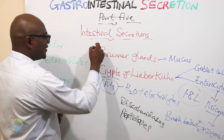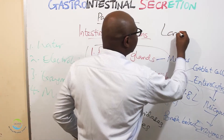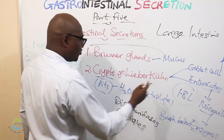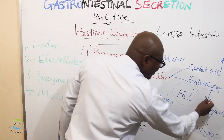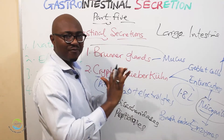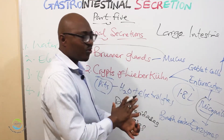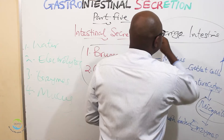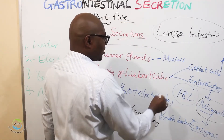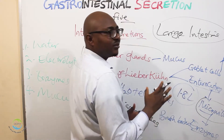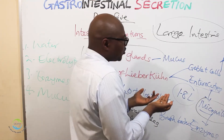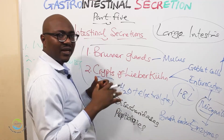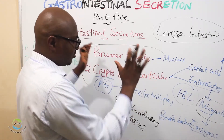In the large intestine, the crypts of Lieberkühn are present with those cells, but without microvilli — the large intestine does not have microvilli. So there are no enzymes, and it doesn't secrete any enzyme for digestion. The large intestine secretes a lot of mucus from goblet cells, and the enterocytes reabsorb water and electrolytes.